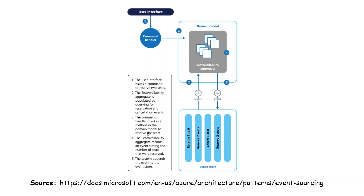Here is the data flow: the user interface tries to reserve two seats. We check to see if the seats are booked by querying the current state — how many seats are available. If seats are available, we send an event to record the number of seats being reserved.